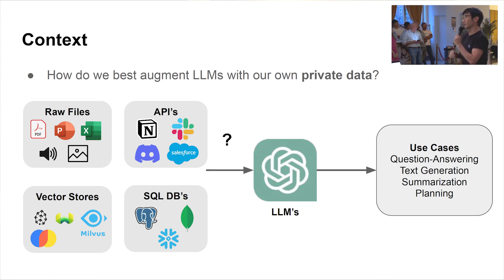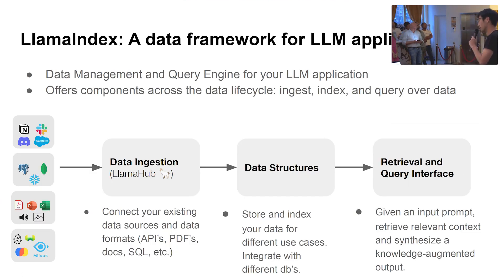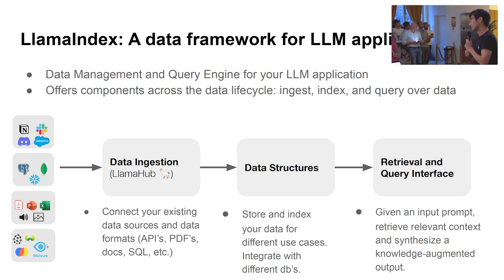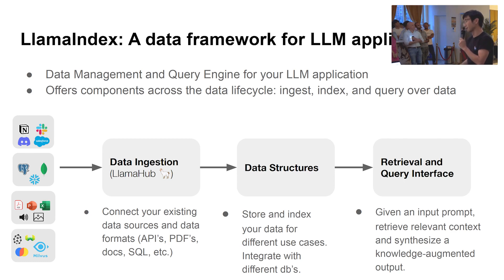LlamaIndex has been around as a company for about five months and as a project for about ten months. Since the early days, this has been the key question we've been thinking about. LlamaIndex is a data framework for LLM applications — it helps you build LLM apps over your data. There are two main categories it solves: how to ingest data into storage like a vector database, and how to retrieve and query your data with standard RAG techniques or agents. It also has structured outputs, evals, and other auxiliary features.